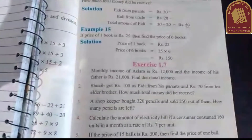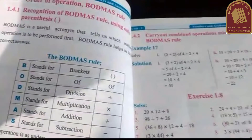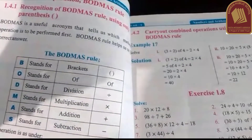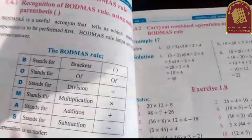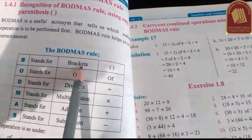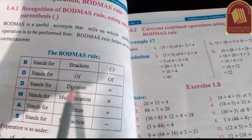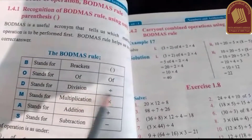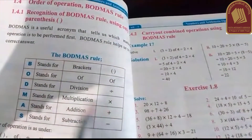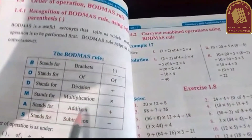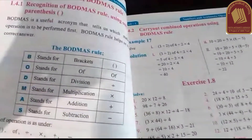Now I will go to my topic. Today's topic is the BODMAS rule. BODMAS rule means how to perform mathematical operations. B stands for Brackets, O stands for Of, D stands for Division, M stands for Multiplication, A stands for Addition, and S stands for Subtraction.